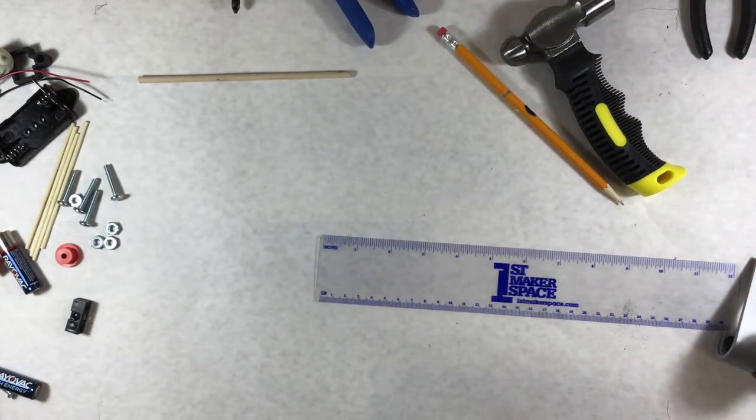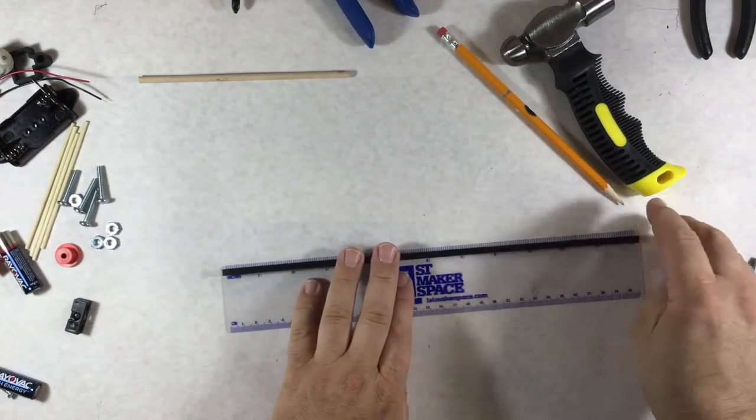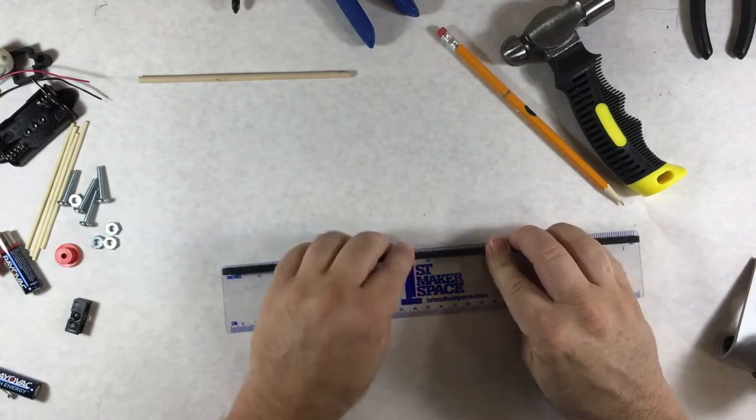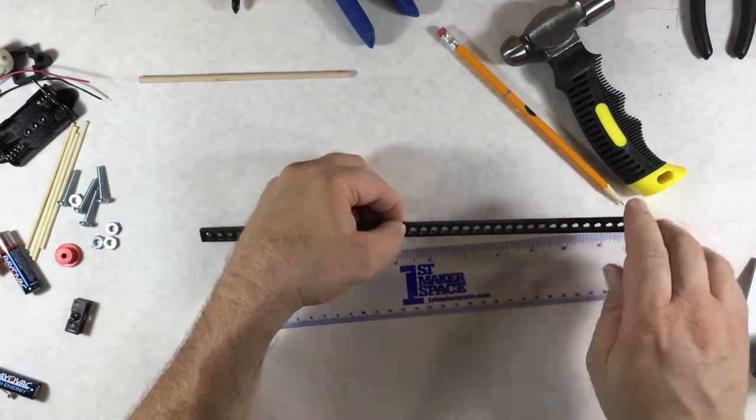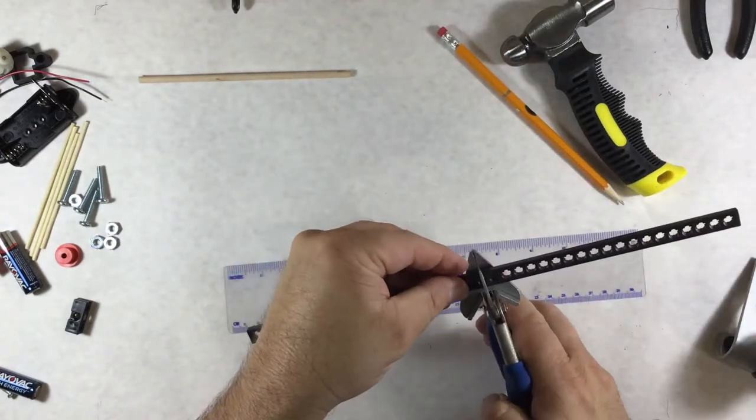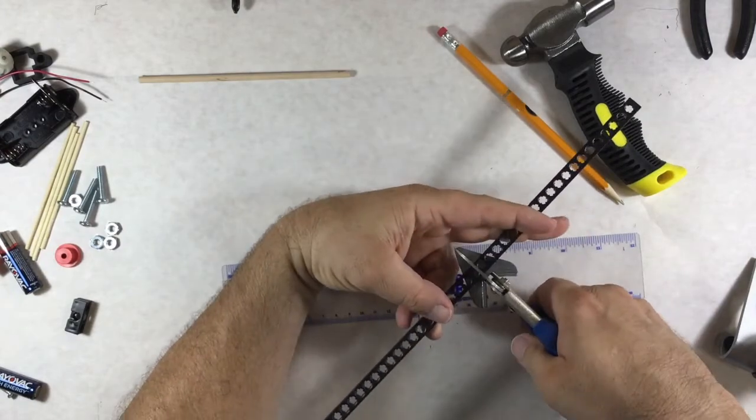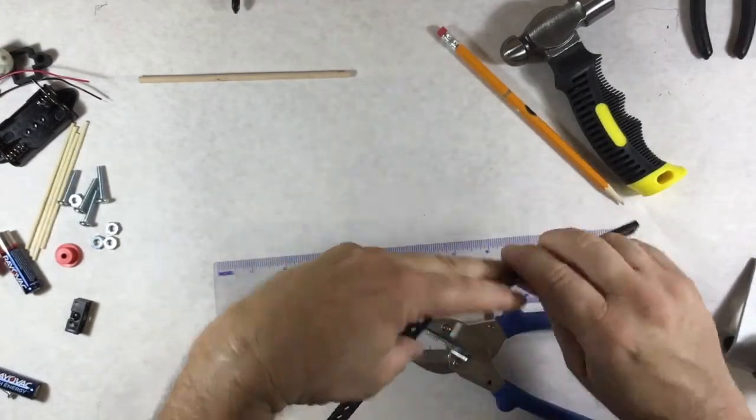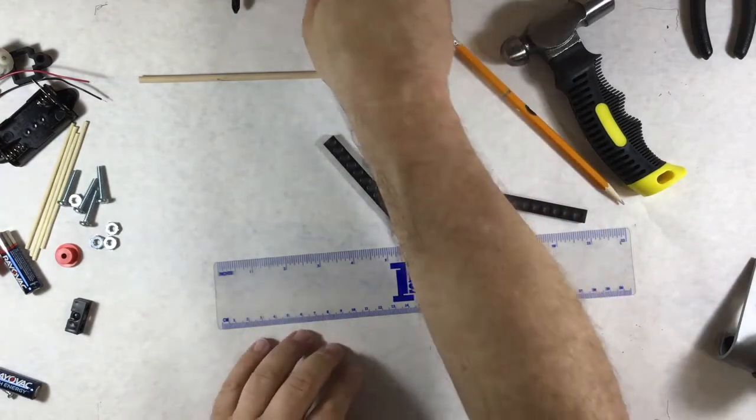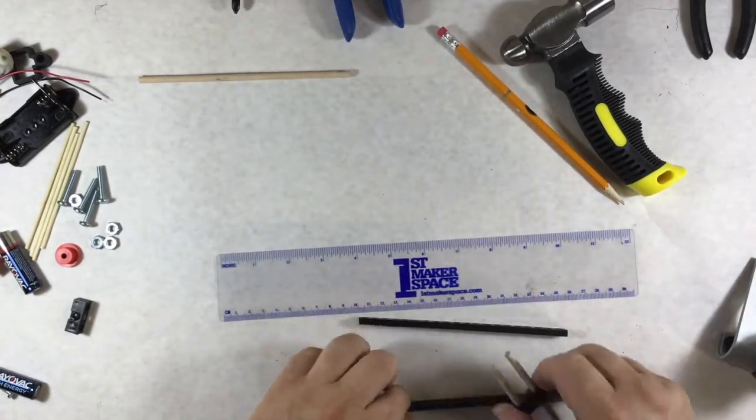Now I need to take the next step, to take this long strip and cut it in half. Now you could measure it. It is actually 12 inches, so I have to cut it at six. Or you can count the holes. Somehow keeping things so they don't go flying all over the place.